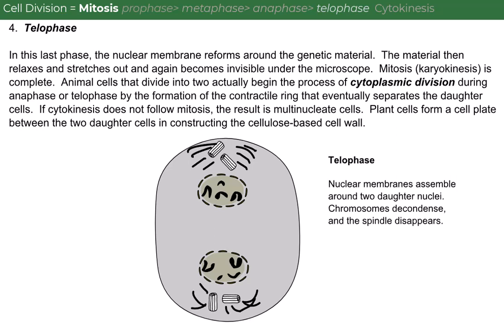Mitosis is complete. Animal cells that divide into two actually begin the process of cytoplasmic division during anaphase or telophase by the formation of the contractile ring that eventually separates the daughter cells. If cytokinesis does not follow mitosis, the result is multinucleate cells. Plant cells form a cell plate between the two daughter cells, constructing the cellulose-based cell wall.